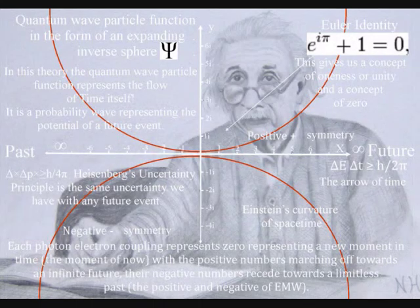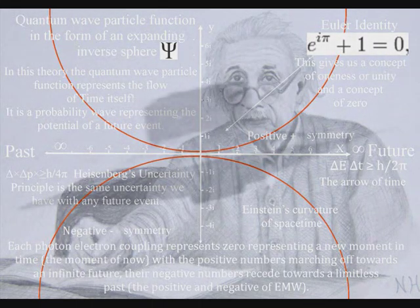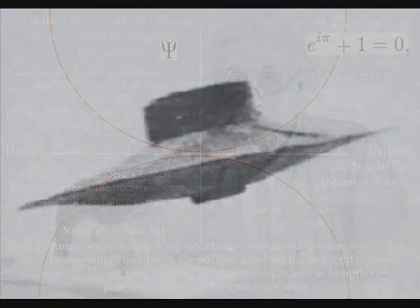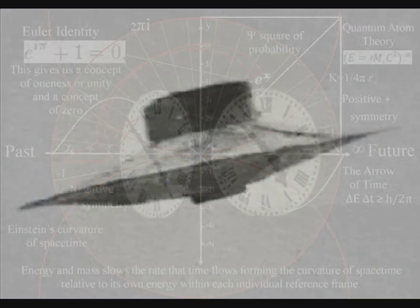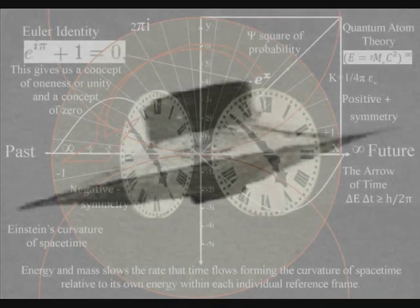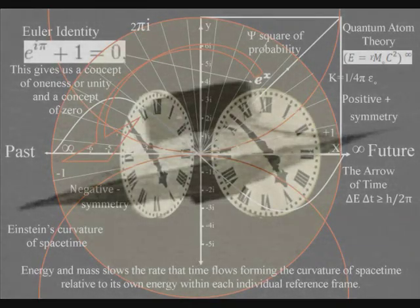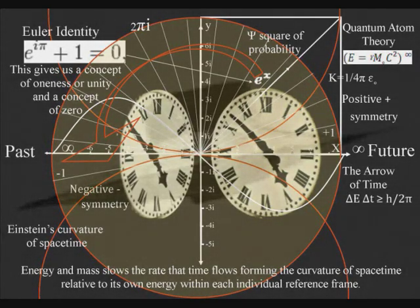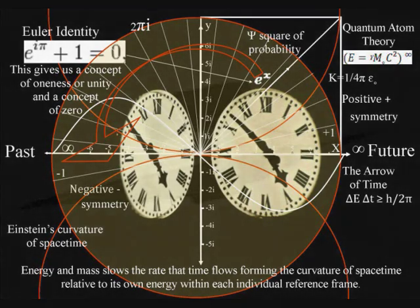This idea might sound mad, but it can be based on Einstein's theories of relativity. In special relativity, moving clocks run slower, and in general relativity, clocks run faster higher in a gravitational field. Therefore we can see that the greater the energy of an individual reference frame, the slower time runs within that reference frame. This is called time dilation, and it is a totally natural process within our universe.